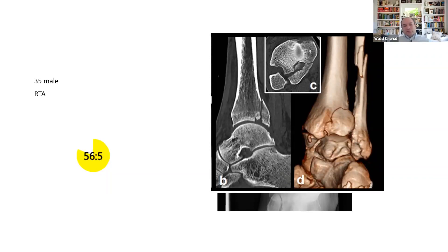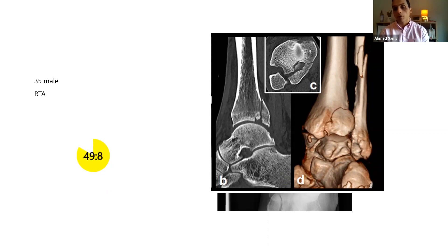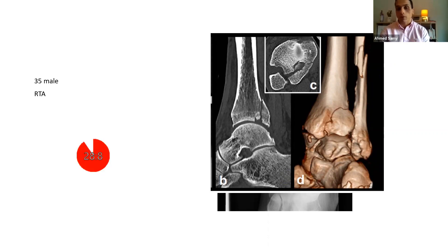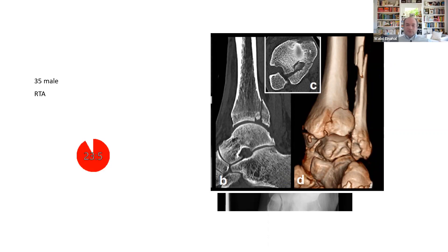Regarding the posterior malleolus — on the sagittal view I can see a small interposed fragment between the large chunk and the main shaft of the tibia. This fragment is often very difficult to fix and tends not to stay in place, ending up as a loose body in the joint. So most of the time it's a comminuted fragment that we excise, then reduce the main posterior malleolus fragment to the tibial shaft.